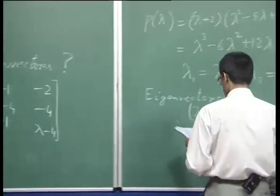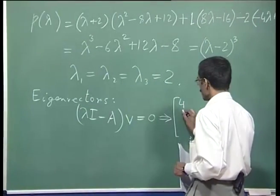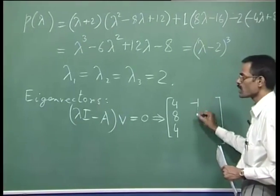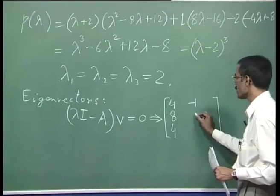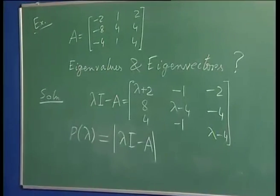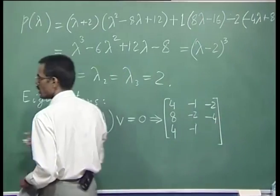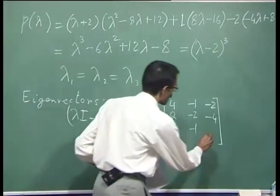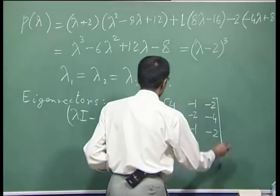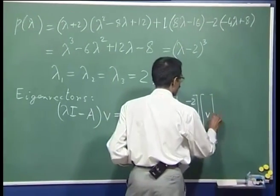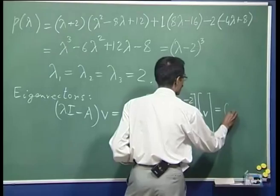That gives us the matrix with entries 4, 8, 4; minus 1, 2 minus 4 (that means minus 2); minus 1; and in the third column, minus 2, minus 4, and then 2 minus 4 (that means minus 2) into this eigenvector v.